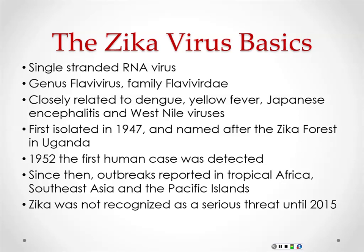Zika is a single-stranded RNA virus, part of the genus flavivirus family, flaviviridae. It's closely related to other mosquito-borne illnesses like dengue, yellow fever, Japanese encephalitis, and West Nile virus. It was first found in 1947 and named after the Zika forest in Uganda. The first human cases were in 1952, and then it kind of dropped off the radar. There were a few outbreaks in Africa and on Pacific Islands, but no one really thought much of it until 2005.